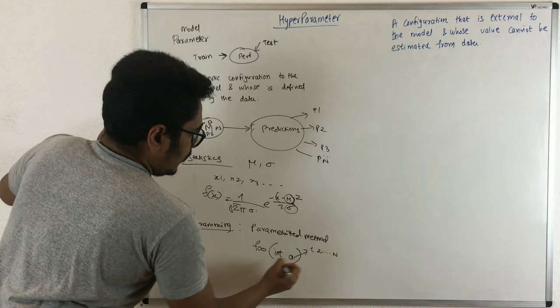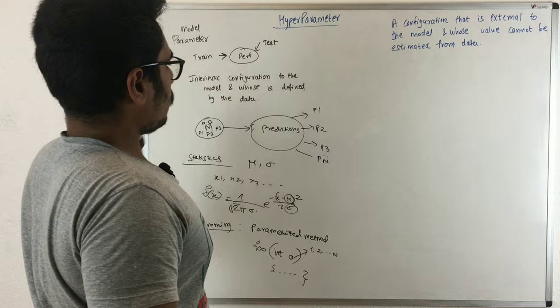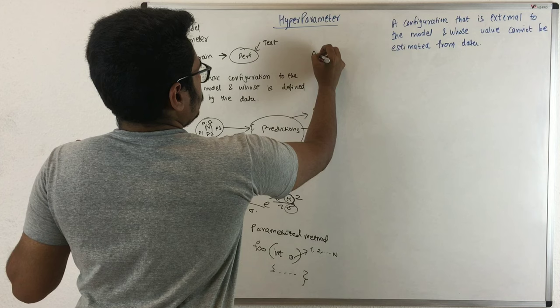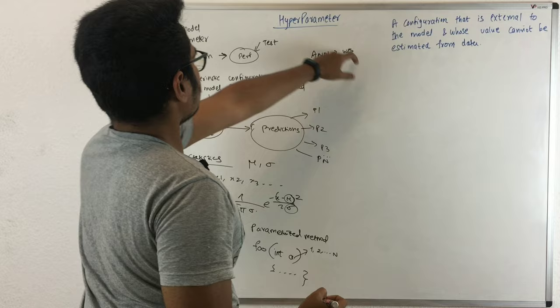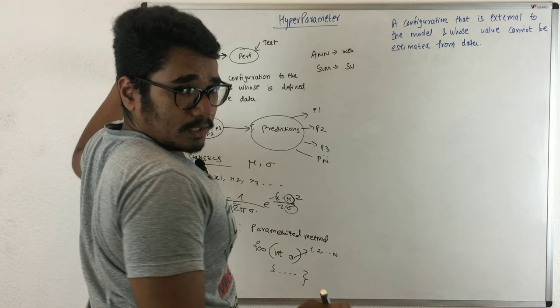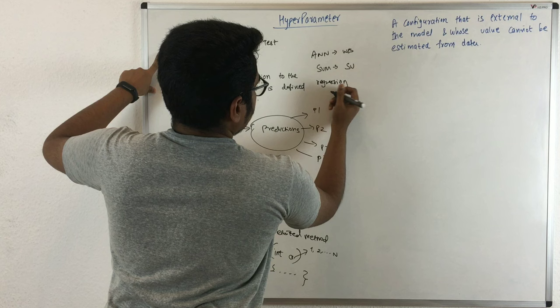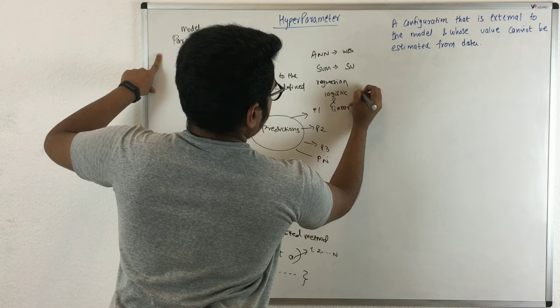These are the basics of model parameters. In machine learning, artificial neural networks have weights which are model parameters. In support vector machines, you have support vectors which are model parameters. In logistic and linear regression, you have coefficients, which are also model parameters.